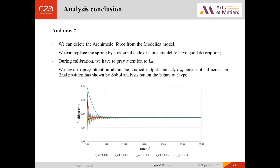And now, so we can delete, as I said, the Archimedean force from the Modelica model. We can also replace the spring by external code or metamodel with a good description. Or basically, we can just pay attention to the calibration of its parameters. And one thing that I repeat, we have to pay attention about the studied output. In our case, the internal radius is the least influential parameter because we are studying the final position. Here, I use the reference parameters and I played with the internal radius value and we can see that the final position is always the same, but the behavior is not the same. We have a semi-periodic and a completely damped behavior. So we have to define our wanted solution.